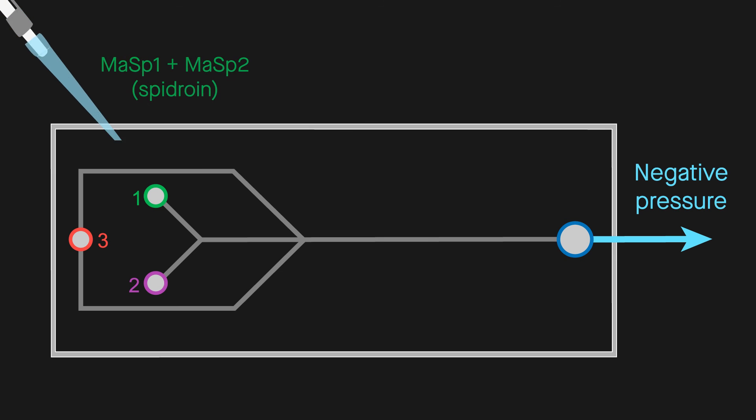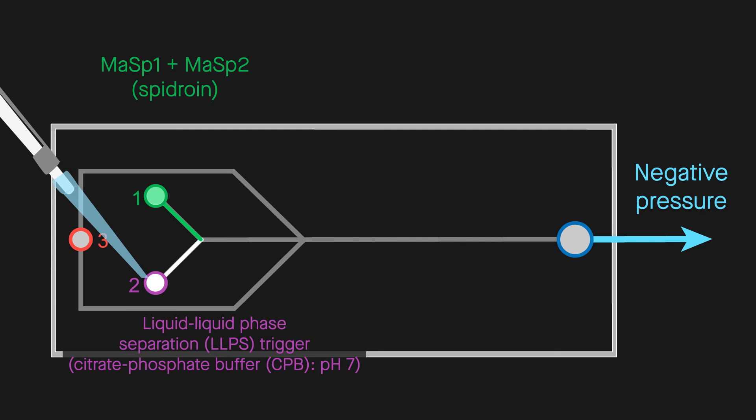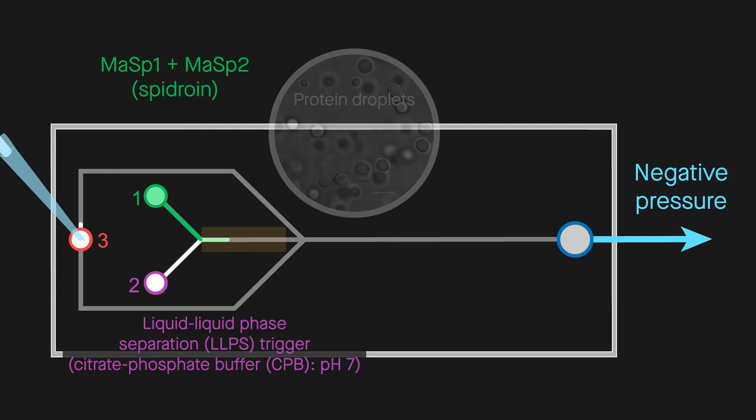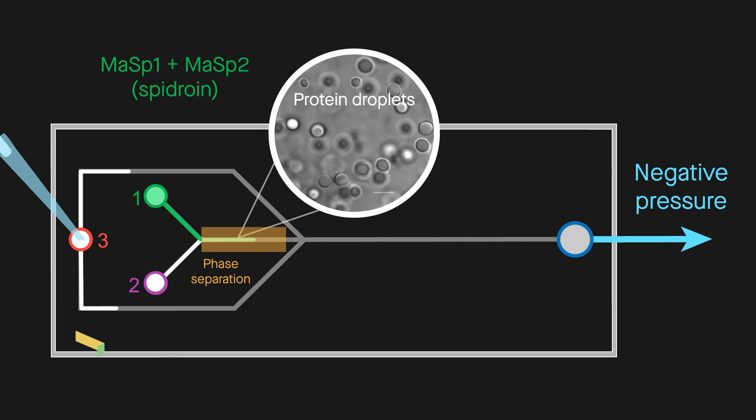Future work will investigate the self-assembly of the artificial silk when adding another key spider silk protein. The researchers also plan to swap out specific amino acids in the silk proteins to explore the critical first step of phase separation.